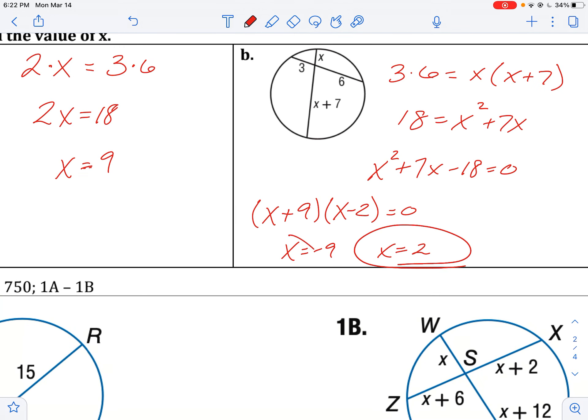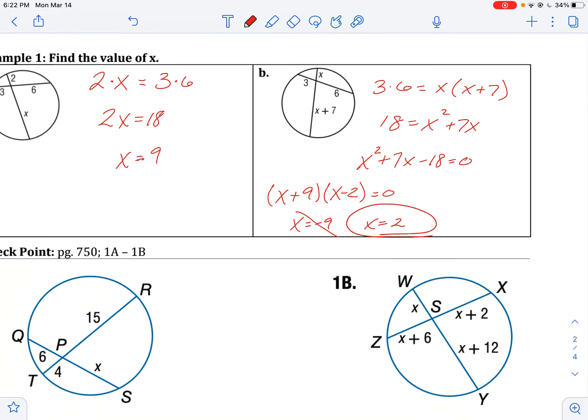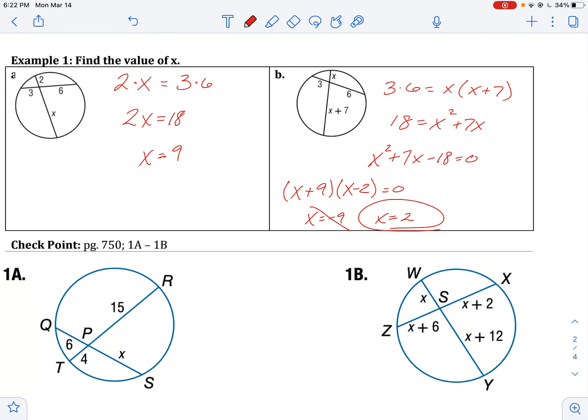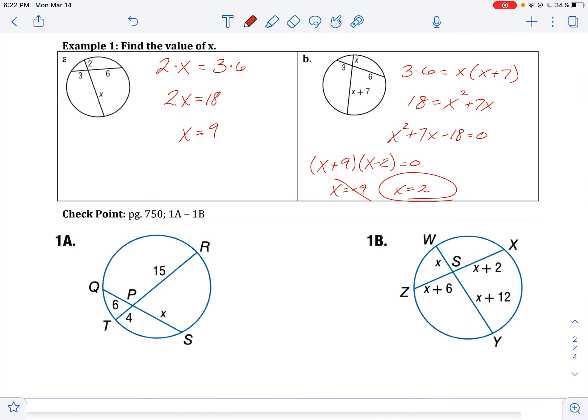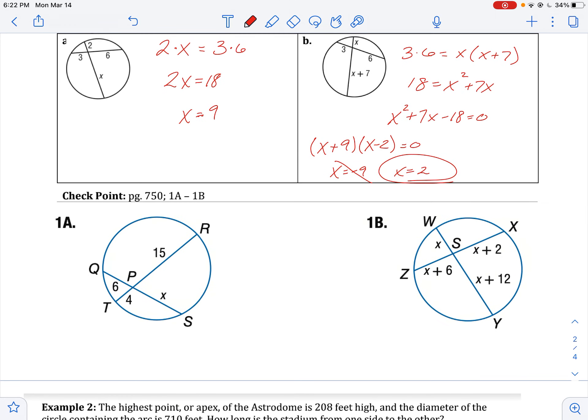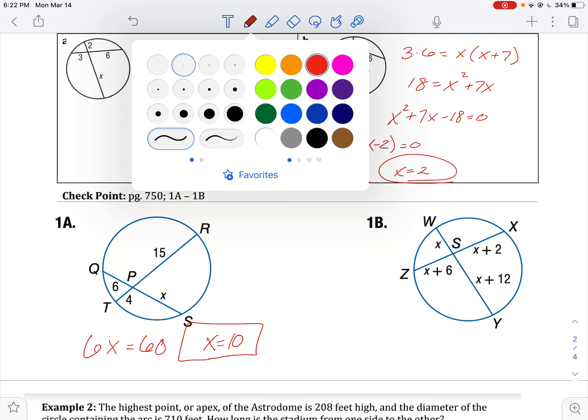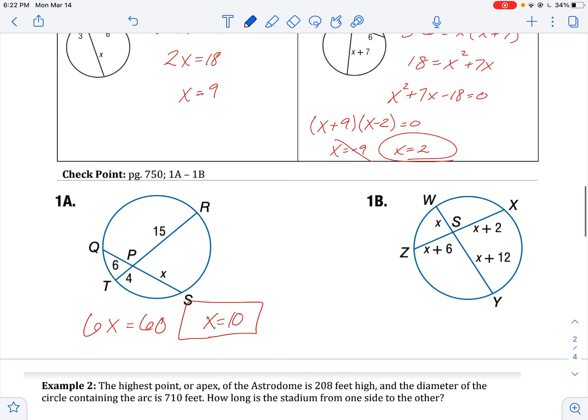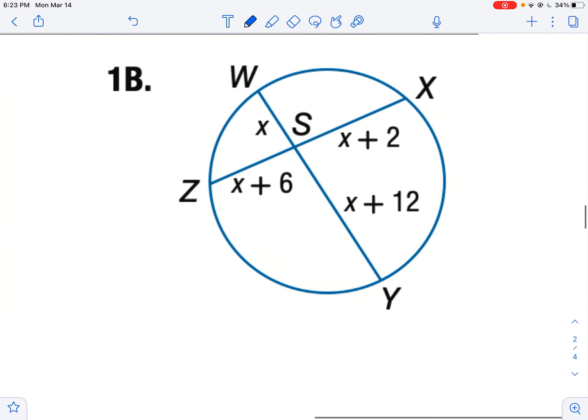So my only answer could possibly be X equals 2. So you're going to have an extraneous solution. You've got to look out for that. Why don't you pause the video again, try 1A and 1B, and then unpause to check your work. All right, so this would be 6 times X equals 60, or X is 10. And this one's a little bit harder.